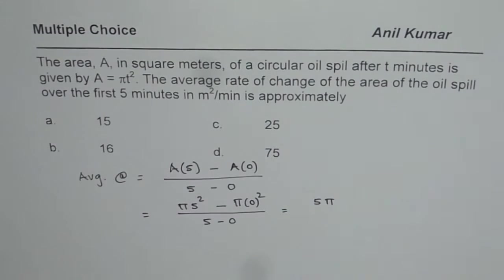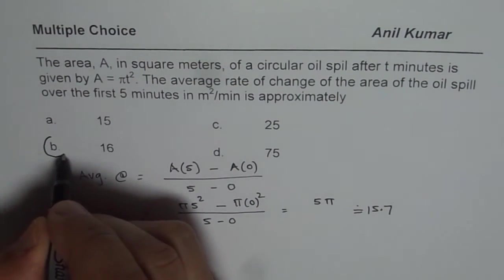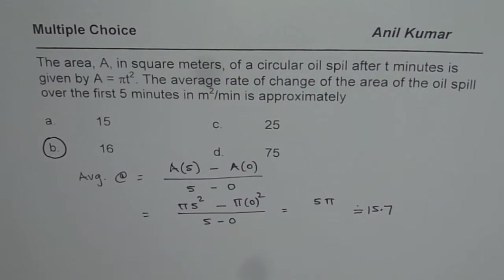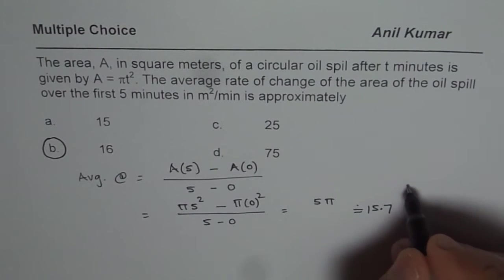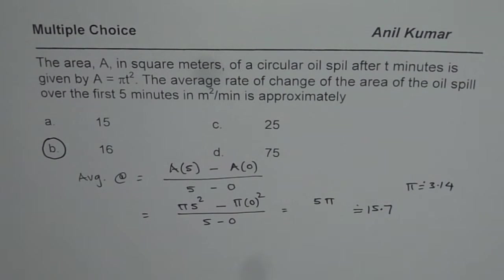Since the approximate answer is 15.7, the better choice is b. Do you understand? B is closer to our rate of change. Use 3.14 for pi and find your answer. That is how you could do it.